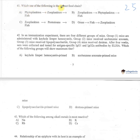Question number 41: Which one of the following is the correct food chain? Option A: phytoplankton. Option B: zooplankton, phytoplankton, fish. Option C: zooplankton, protozoans, fish. Option D: grass, fish, zooplankton. The correct answer is option A.